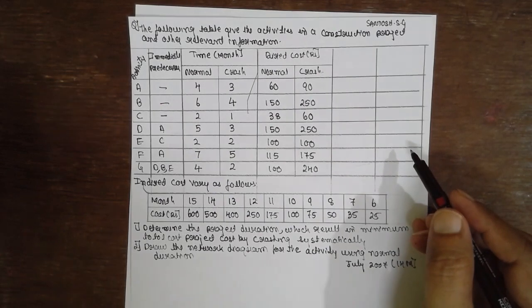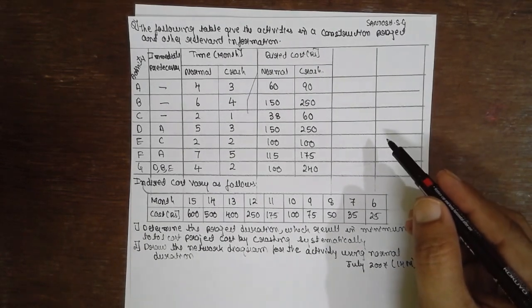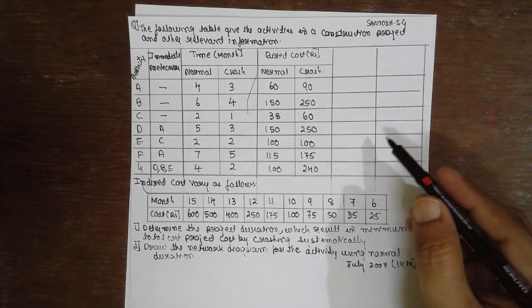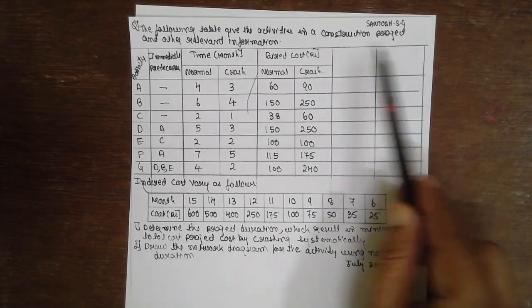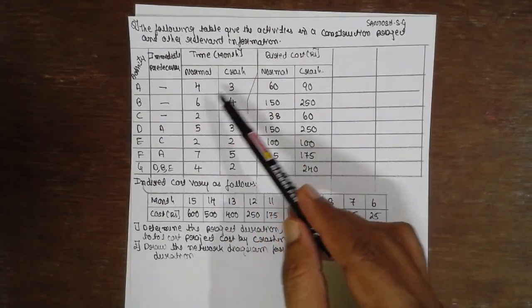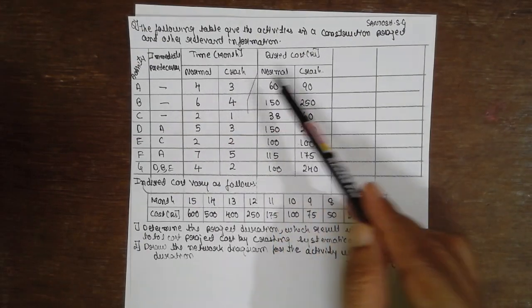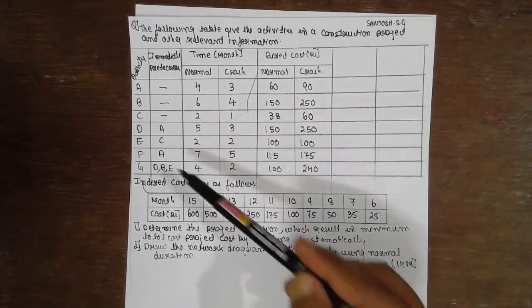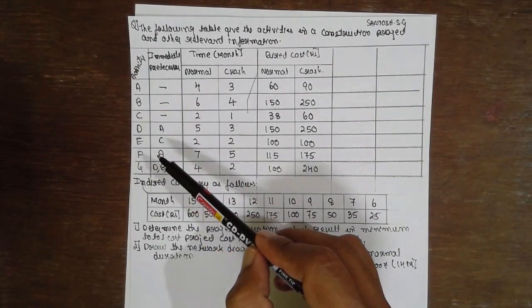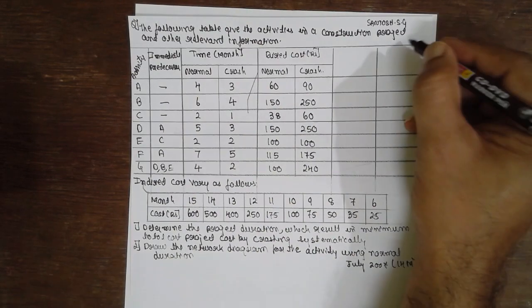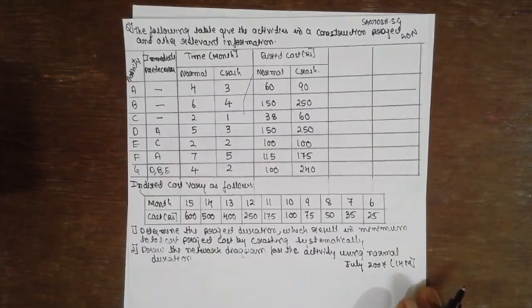I am Santosh Ganyankar. Today I am teaching you Operations Research, specifically the crushing of networks. This is the problem: the following table gives the activity, and we need to construct the project. Other relevant information is also given. The activity, predecessor, time, and direct cost are given. Since activities are in terms of ABCD, I am referring to the AON method — Activity On Node method.